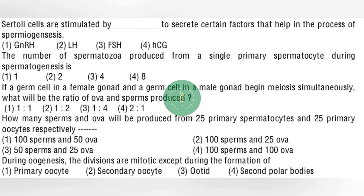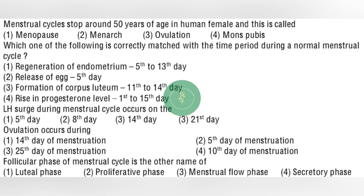Next question: if a germ cell in a female gonad and a germ cell in a male gonad begin meiosis simultaneously, what will be the ratio of ova and sperms produced? — option number 3: 1 is to 4. Next question: how many sperms and ova will be produced from 25 primary spermatocytes and 25 primary oocytes respectively? — option number 2: 100 sperms and 25 ova. Next question: during oogenesis, the divisions are mitotic except during the formation of — option number 2: secondary oocyte. Next question: menstrual cycle stops around 50 years of age in human female and it is called — option number 1: menopause.